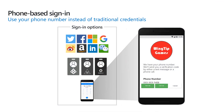Here are some samples of what you can achieve with Identity Experience Framework. With phone-based sign-in, users can come to your application and authenticate using their phone number instead of using a username and password. Azure AD B2C will then send the user a temporary code via text message or call that the user will use to finish the authentication process.